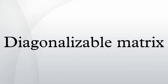Diagonalization is the process of finding a corresponding diagonal matrix for a diagonalizable matrix or linear map. A square matrix that is not diagonalizable is called defective.